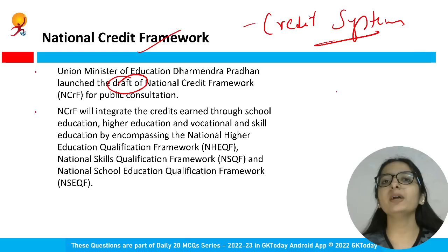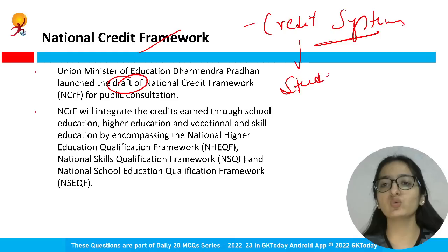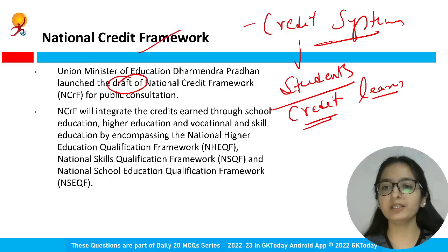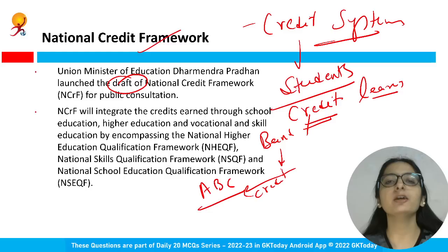The credit system concept already exists in national institutes of open schooling, with a choice-based credit system where degrees are prescribed in terms of credits to be earned. The draft proposes extending this to school students and higher education. Credits will be given based on learning and extracurricular activities and deposited into an Academic Bank of Credits (ABC) account opened upon student registration.